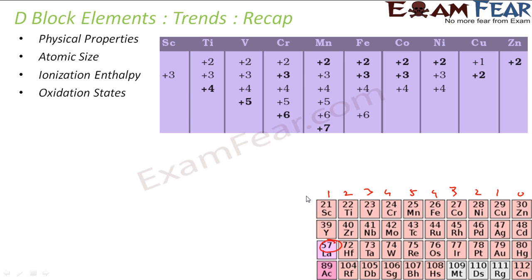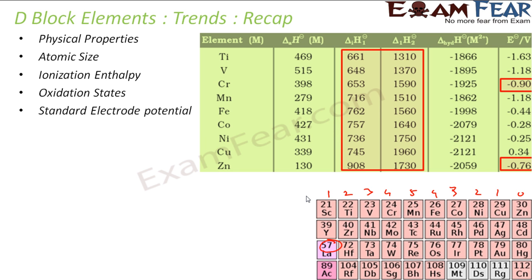Then we have the standard electrode potential. The standard electrode potential actually becomes less negative as we go across the series, because of an increase in the first and second ionization energy. However, there is some irregularity in this trend.